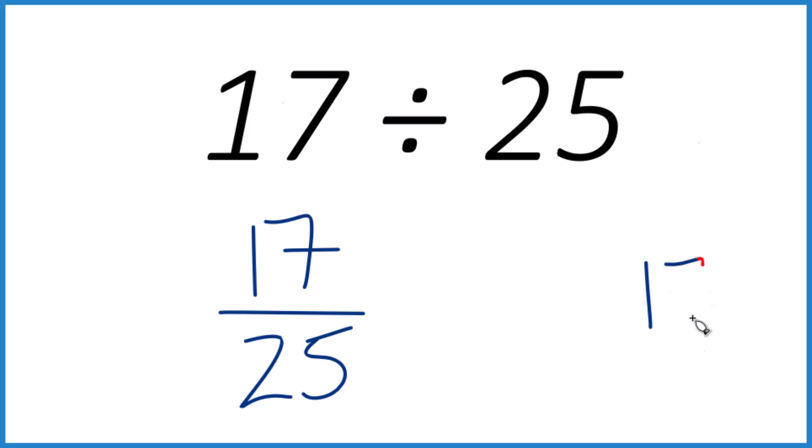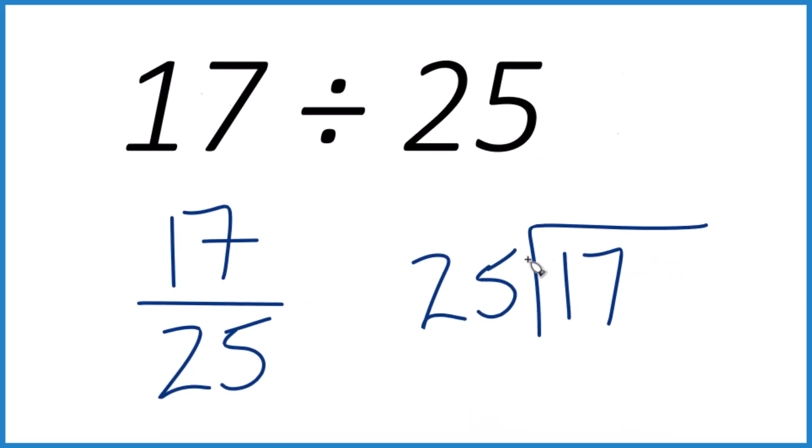So we're going to take our 17, and then we have 25, and we're going to use our long division. So 25 doesn't go into 17.